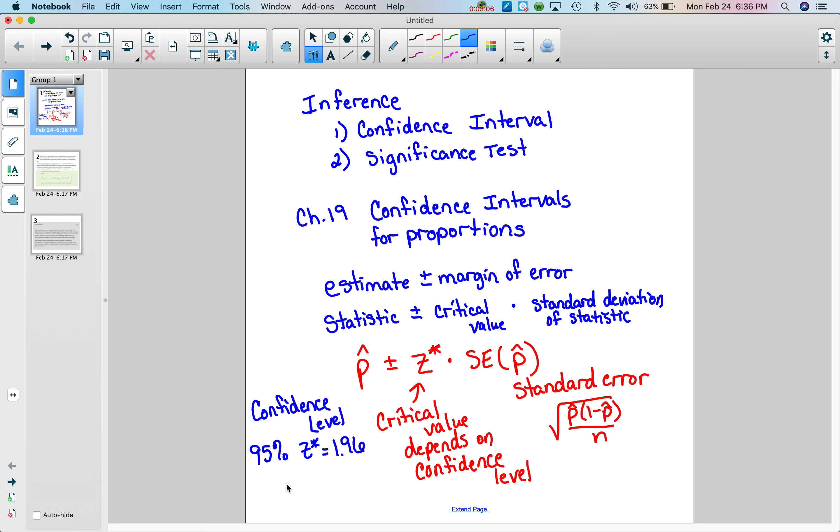Another common confidence level is 90%, and for that a z star value is 1.645. Another common one is a 99% confidence level, and for that case z star would be 2.576. I'll show you where these values are located on our chart.